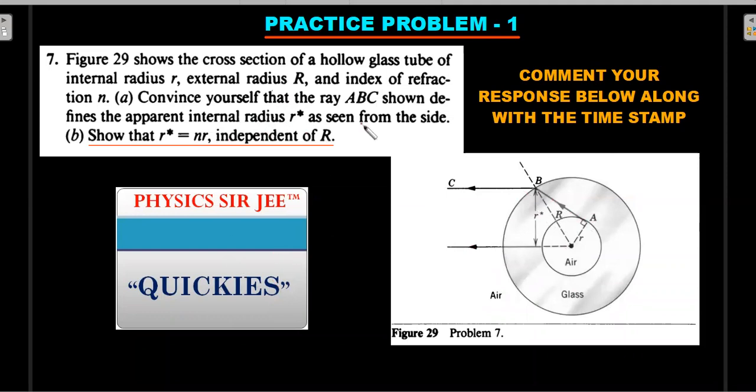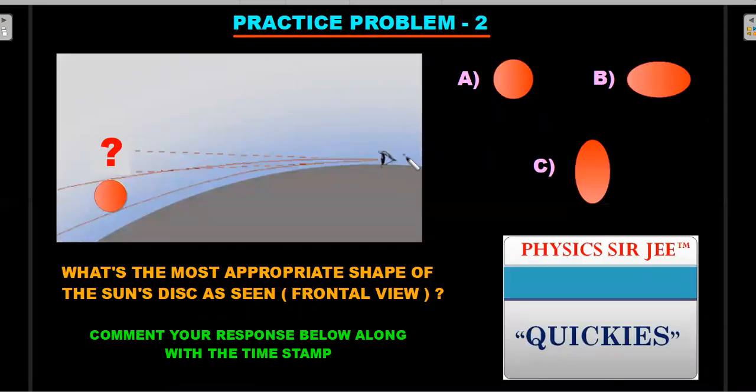Here's practice problem two, which I believe is an extension of this one. Same idea of a person watching a sun that is actually setting - there will be curved path followed by these rays and I will think the sun is here. Instead of just looking at it as a point, if I take the size of the sun also, you need to tell me which of the right side options are the most appropriate frontal view of the sun's disc as seen by the person. Will it be the same circular disc, widened or flattened, or widened in the vertical direction? You have to think - horizontally or widened vertically. Comment your response along with the time stamp.